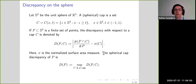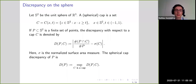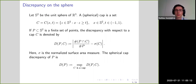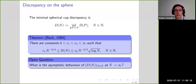We look at the spherical cap discrepancy, which is the supremum of these quantities over all caps. This is a measure of uniform distribution and it has relations to numerical integration — the setting that was explained on Wednesday.